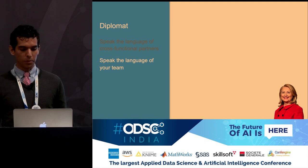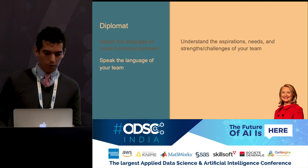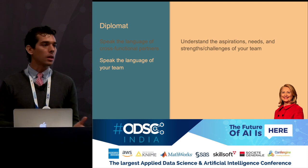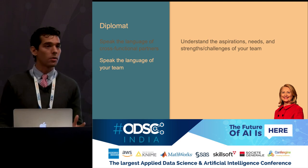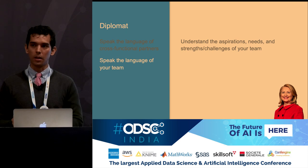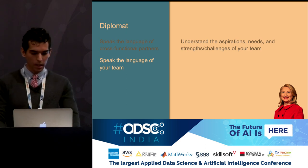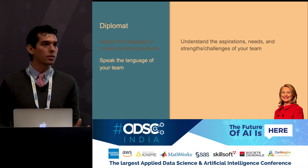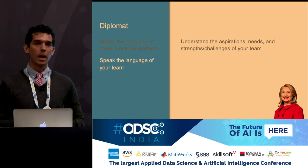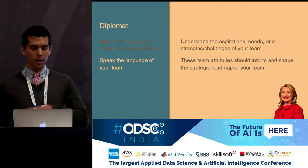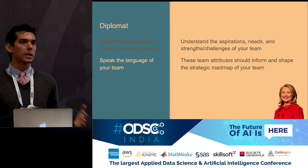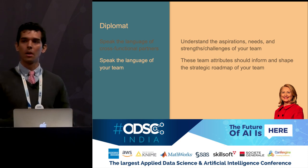Second, you need to be able to speak the language of your team. This means understanding their aspirations — what they want to work on and how they individually want to grow. You need to understand their needs, where they are currently struggling, and work to help unlock that next level for each individual and for the team collectively. You also want to understand the strengths and challenges of your team — what they are best suited to do and where the areas of opportunity are. These team attributes should inform and shape the strategic roadmap you produce.